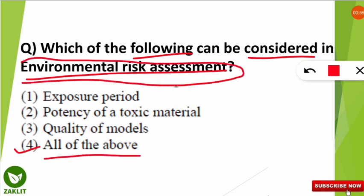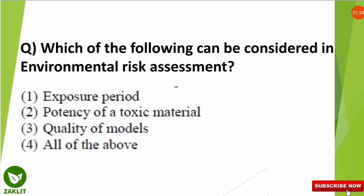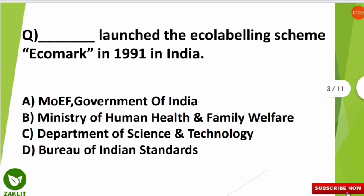Environmental risk assessment considers several factors. Taking the example of a toxic element: number one is the exposure period — how long it is persistent in the environment. Number two is the potency of the toxic material — its concentration and power. Finally, the quality of models used for risk assessment should also be considered. So all of the above should be considered in environmental risk assessment.